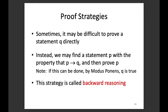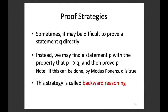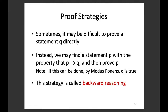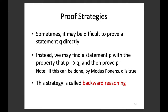Another technique: backward reasoning. If it's difficult to prove Q directly, find a statement P that you know is correct, and also show that P implies Q is correct. Then by modus ponens, Q follows. So instead of showing Q directly, we show P and P implies Q. This changes the problem — creating two statements P and 'P implies Q' to show instead. We move backward a little bit so we can step forward later.